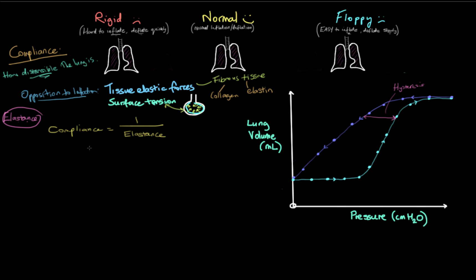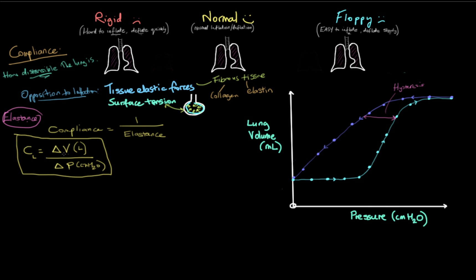Mathematically speaking, lung compliance — we'll use C_L for compliance of the lung — is equal to a change in volume (in liters) for a given change in pressure (in centimeters of water). If you have a larger change in volume for the same change in pressure, the lung is easier to inflate. If you have the same change in pressure and get a smaller change in volume, the lungs are harder to inflate. So compliance equals ΔV/ΔP.